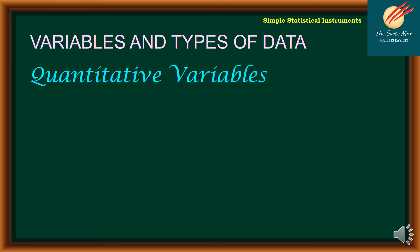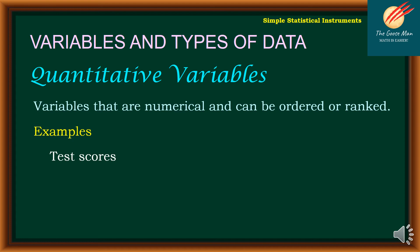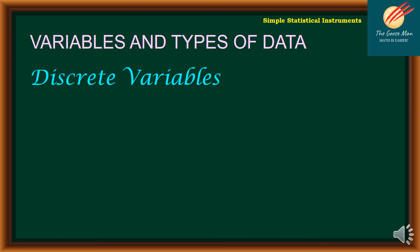Moving on, we will talk about the quantitative variables or quantitative data. Variables that are numerical and can be ordered or ranked. For example, test scores, weight. Perhaps your weight is greater than my weight or my weight is the same as your weight. We can compare that or we can order that or rank. Another example is daily allowance. Perhaps my daily allowance is greater than your daily allowance or the other way around. And finally, our height.